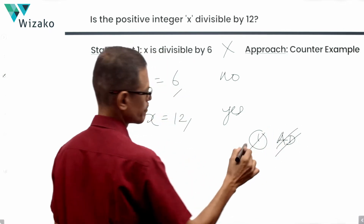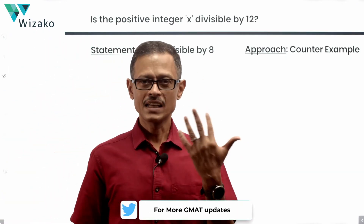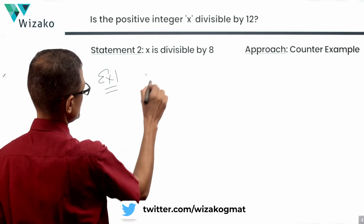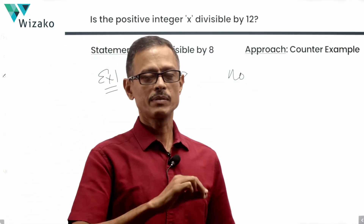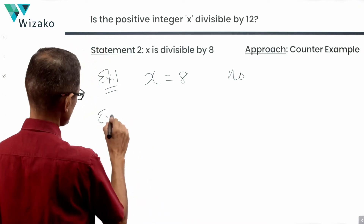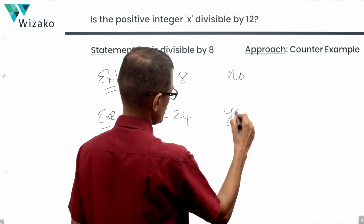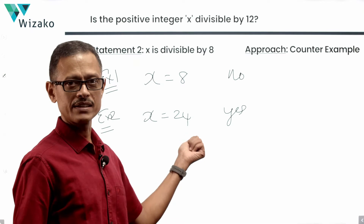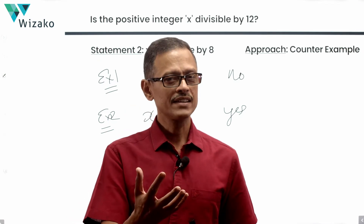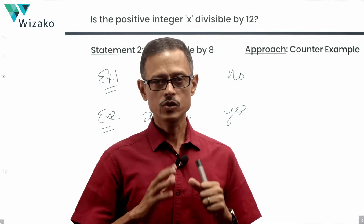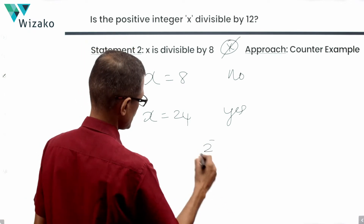We rule out answer options A and D. Now evaluate statement 2 alone: x is divisible by 8. Again, looking at a counter-example — start with 8. If x is 8, it's divisible by 8, but is it divisible by 12? No. We need a multiple of 8 that is divisible by 12: 8 times 3 is 24. X equals 24: divisible by 8? Yes. Divisible by 12? Yes. So a number divisible by 8 may or may not be divisible by 12. Statement 2 alone is also not sufficient. Rule out answer option B.